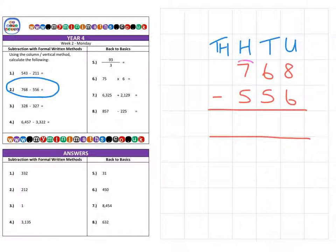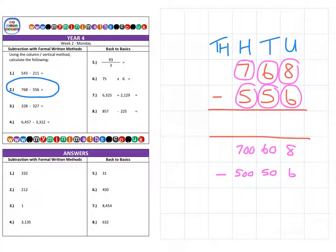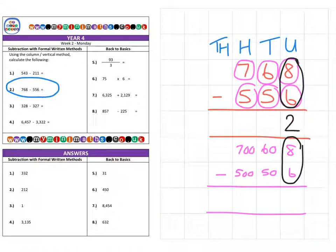When we break that question down, we have 700, 60, and an 8, and we are subtracting 556. First, we can look at 8 units minus 6 units, which gives us 2 left over.